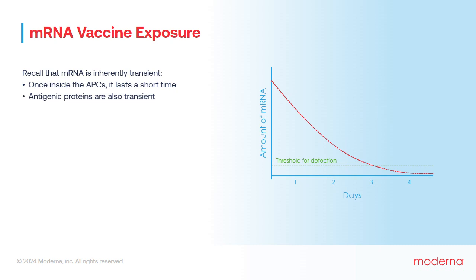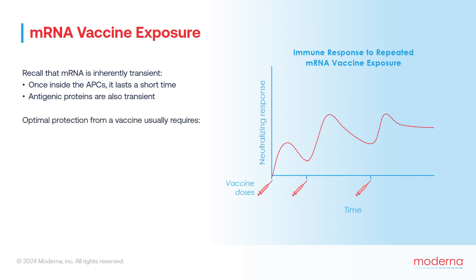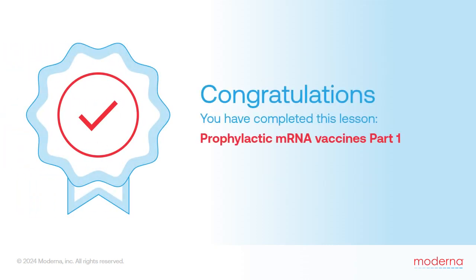Similarly, the antigenic proteins are only present for a limited time as well. Although a single exposure to a strong antigen can be sufficient to generate an initial adaptive immune response, a second and even third exposure often results in stronger and more durable responses. Like most traditional vaccines, optimal protection from an mRNA vaccine requires both a first or prime dose and one or more subsequent booster doses given weeks to months later. In the next lesson, we'll learn more about some special features of mRNA vaccines.